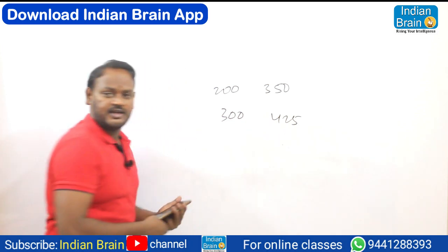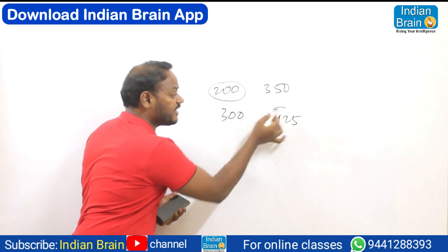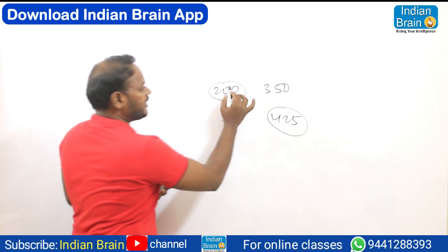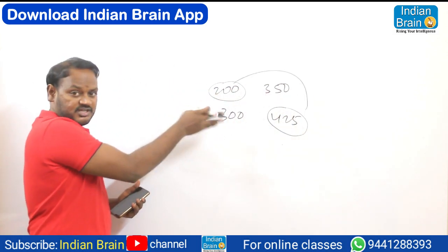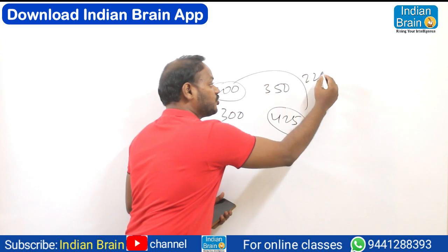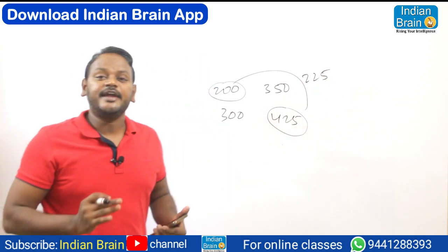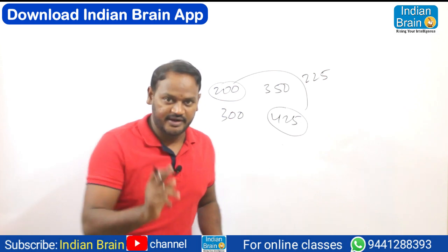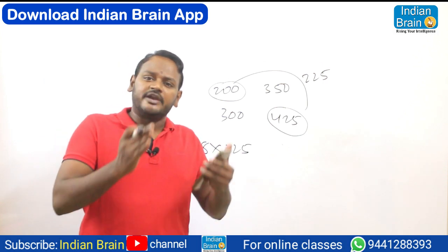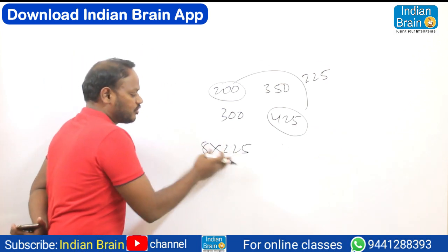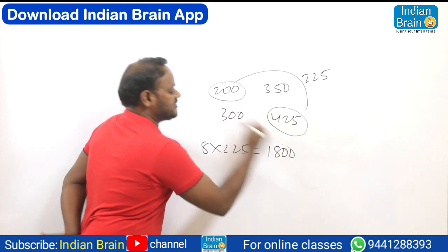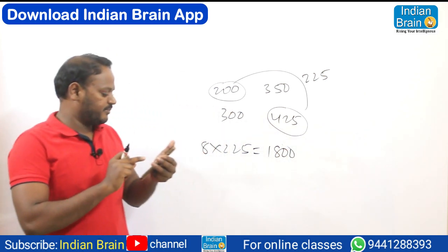With cost price 200 and selling price 425, the profit per book is 225 rupees. Since we are selling eight books, the total maximum profit is 8 multiplied by 225. That is: 8 × 200 = 1600, and 8 × 25 = 200, so 1600 + 200 = 1800 rupees. The answer is 1800 rupees.